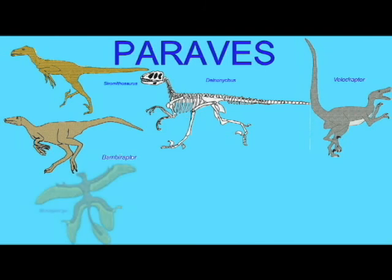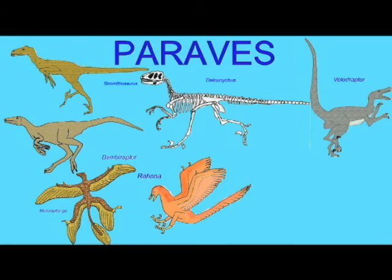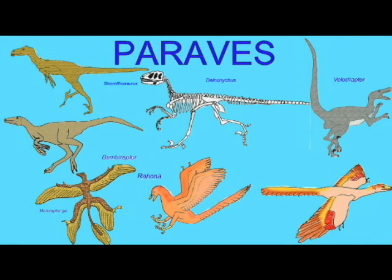A number of forms possessed feathers and flight feathers, and some might even have been able to fly, including the very small Microraptor, which possessed flight feathers on both its arms and legs, and Rohona, which when first discovered was classified as a bird but is now considered to be a dinosaur of this group.